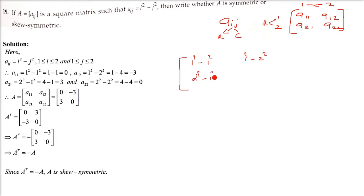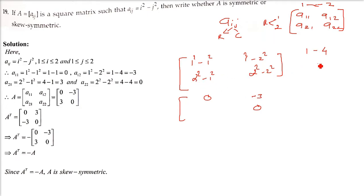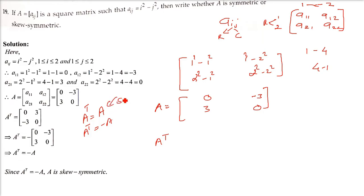So A11 = 0, A22 = 0, A12 = 1-4 = -3, and A21 = 4-1 = 3. So matrix A is [0, -3; 3, 0]. Now to check symmetry or skew-symmetry: if A transpose equals A it is symmetric; if A transpose equals negative A it is skew-symmetric. Let us verify by taking the transpose.